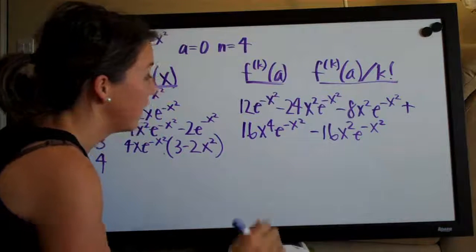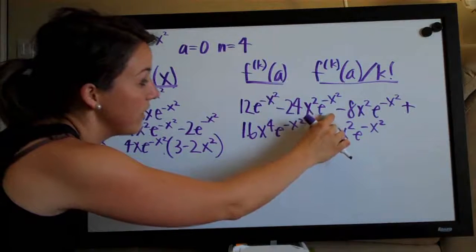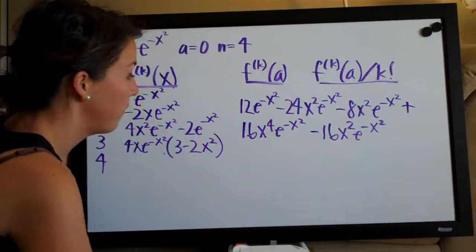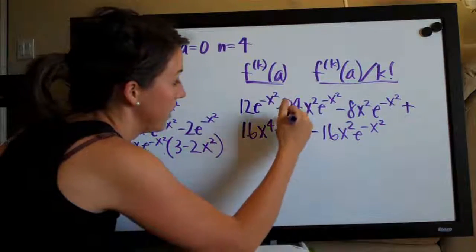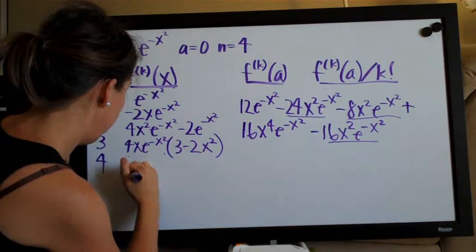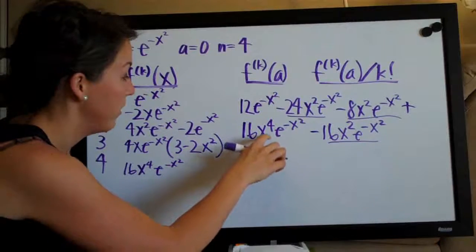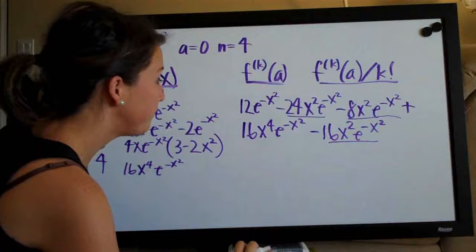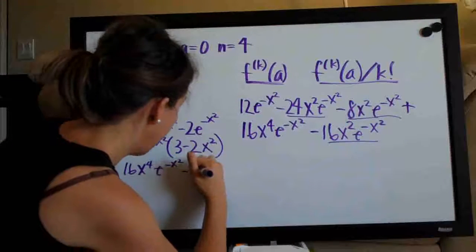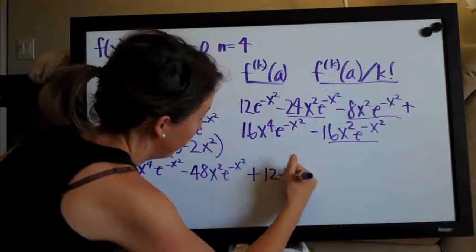Now we should be able to combine some things. We've got minus 24x²·e^(-x²), minus 8x²·e^(-x²), and minus 16x²·e^(-x²) — all the same term — so let's combine those three. I'll write 16x⁴·e^(-x²) out in front since it has the highest exponent. Then combining: minus 24, minus 8 is minus 32, minus 16 is minus 48x²·e^(-x²). And then we've got plus 12·e^(-x²).